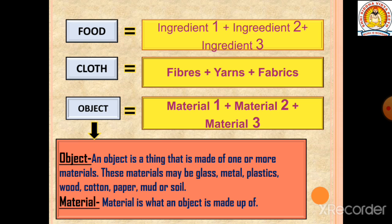So what is an object? An object is a thing that is made of one or more materials. These materials may be glass, metal, plastics, wood, cotton, paper, mud, and soil. Materials are what an object is made up of.